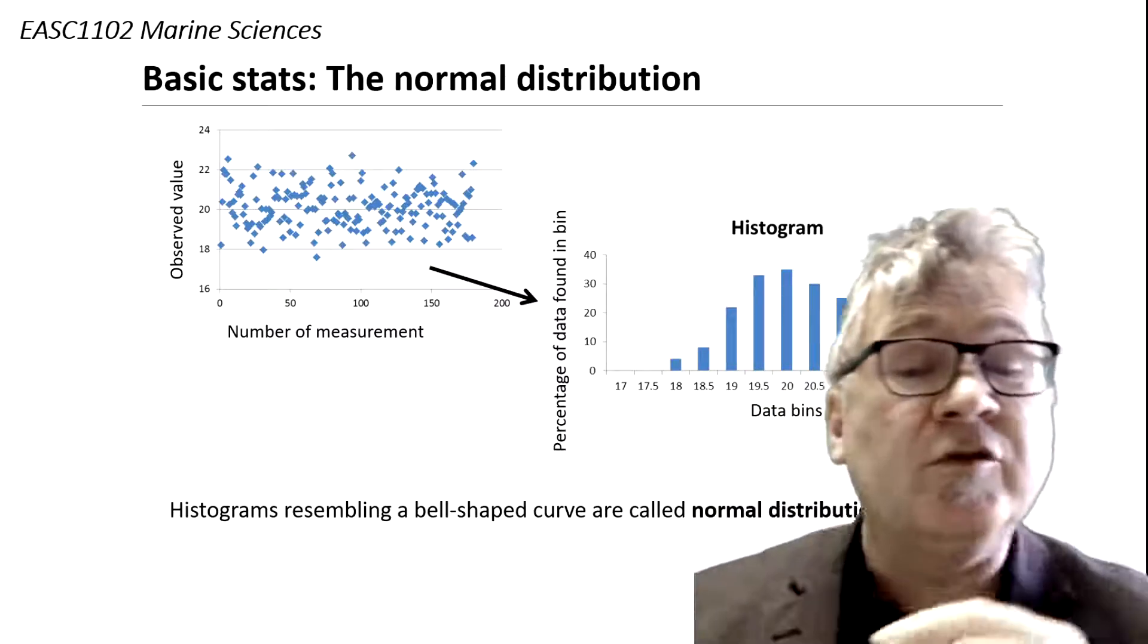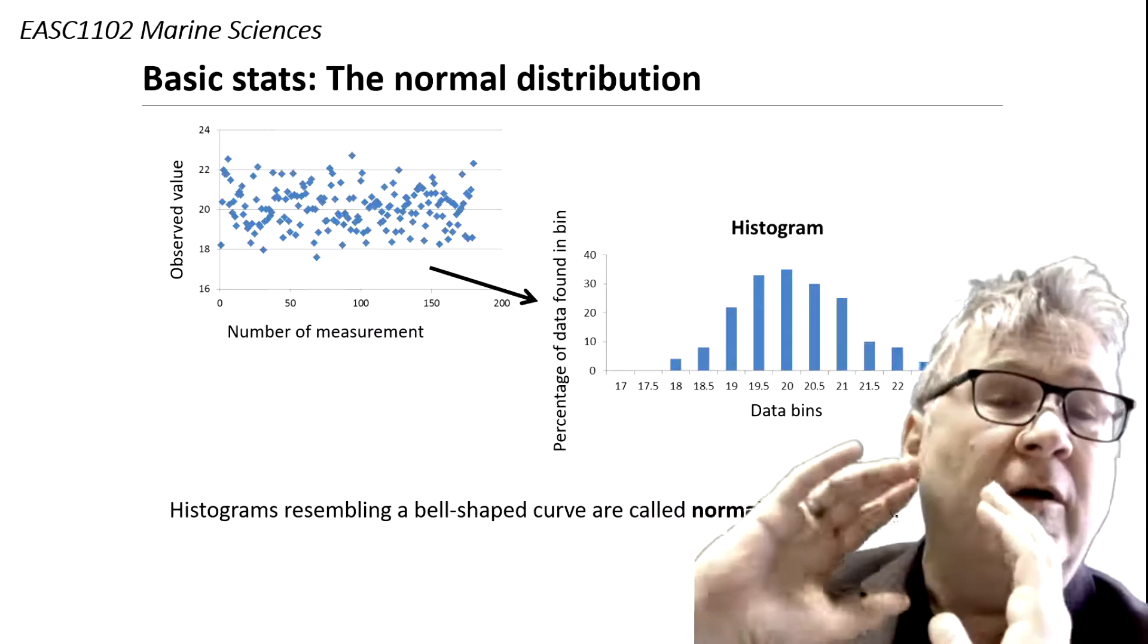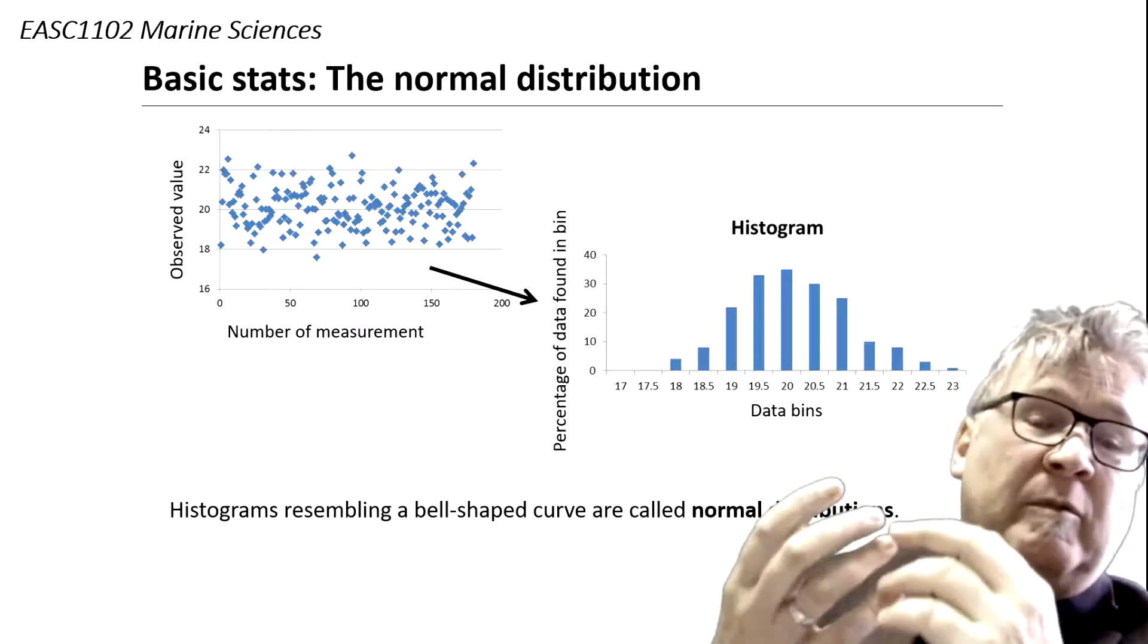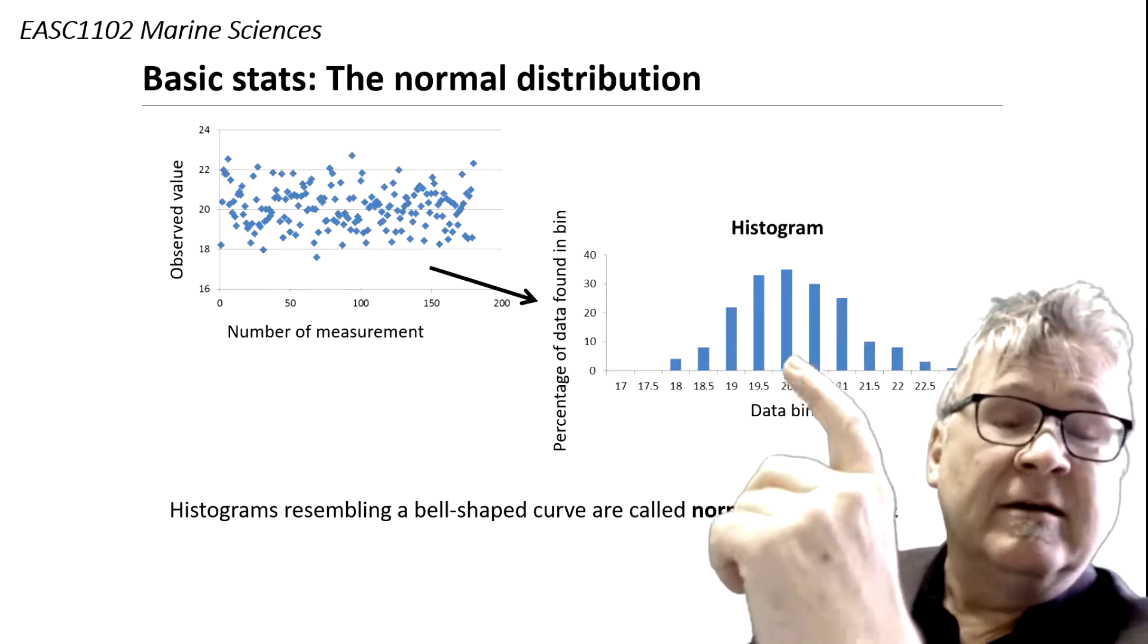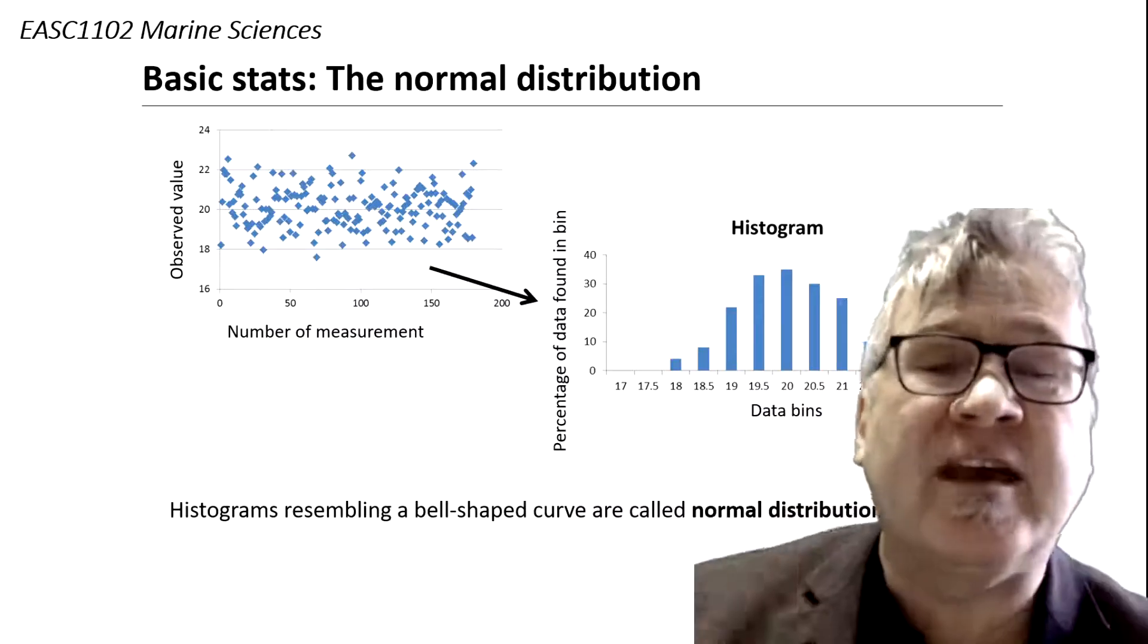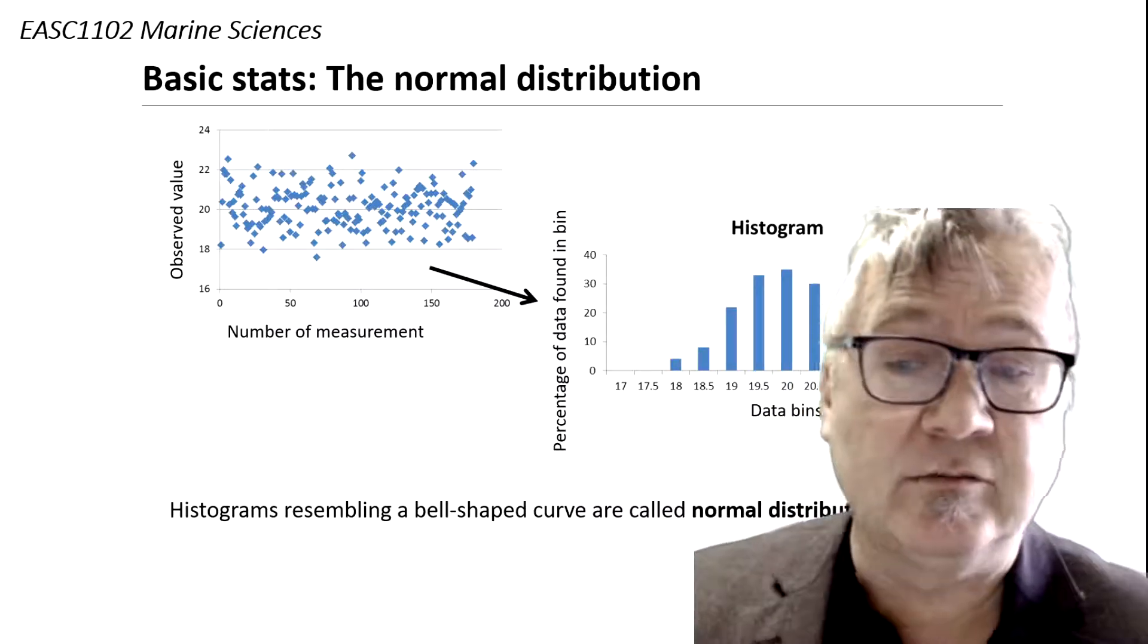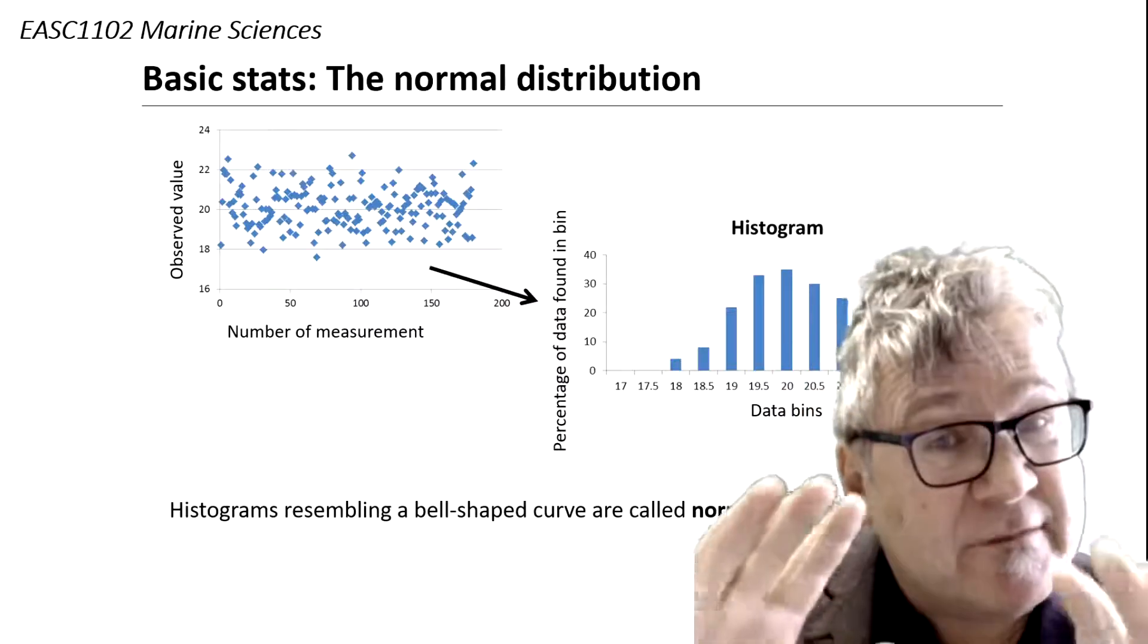And from this distribution you can also see that there is a value which has the largest percentage. You can see the 20 value is the largest percentage and that sort of gives you a first guess of the mean value or the average value. Let's have a further look.